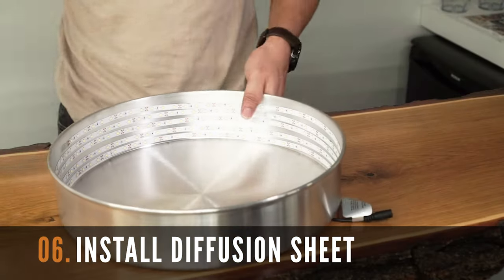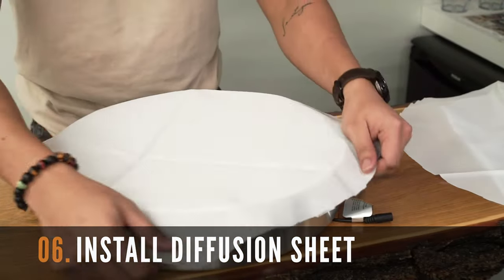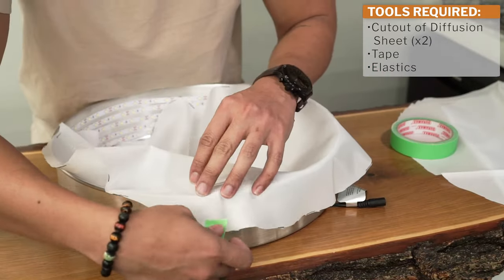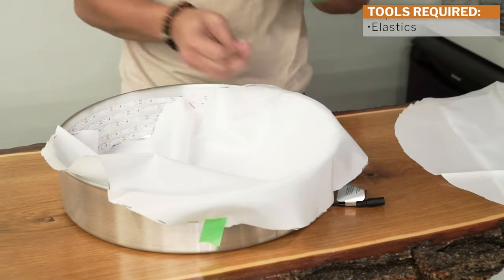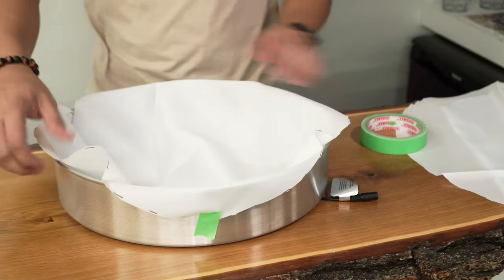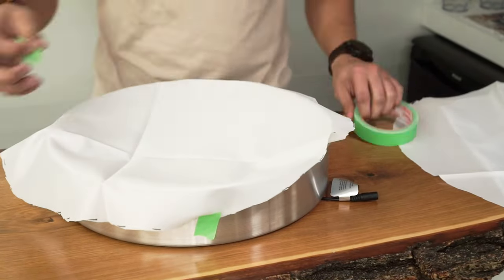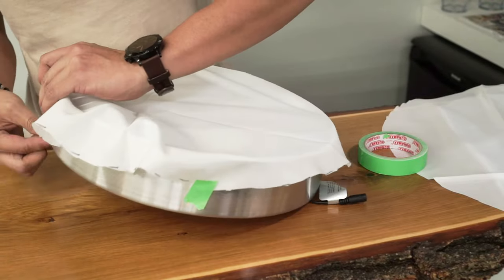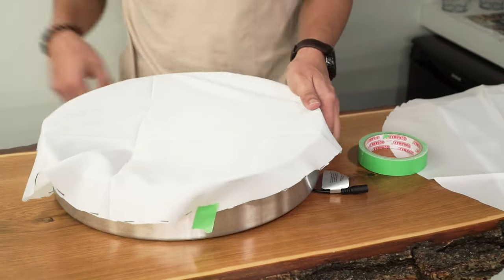The next step is to install the two diffusion sheets in the front of the cake pan. You're going to need to use your tape to temporarily hold the two diffusion sheets around the cake pan until the elastics or the zip ties are placed as a final step.